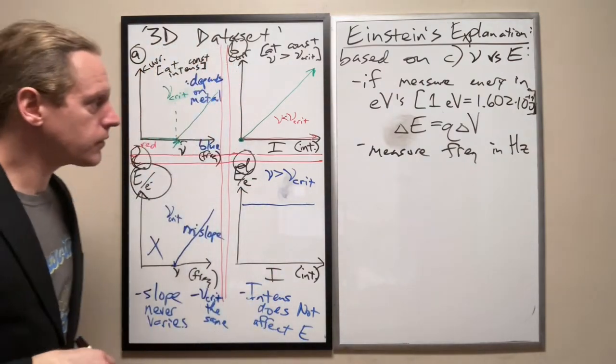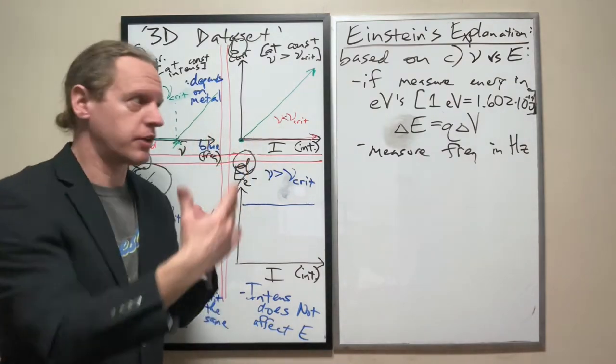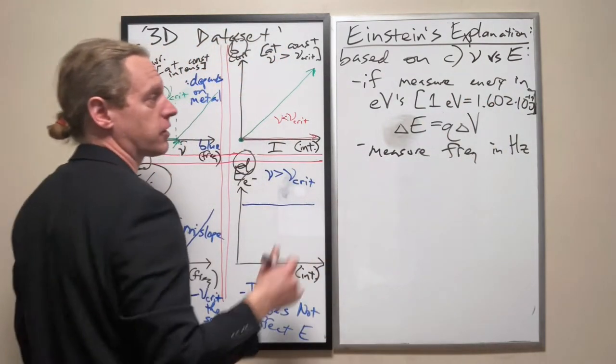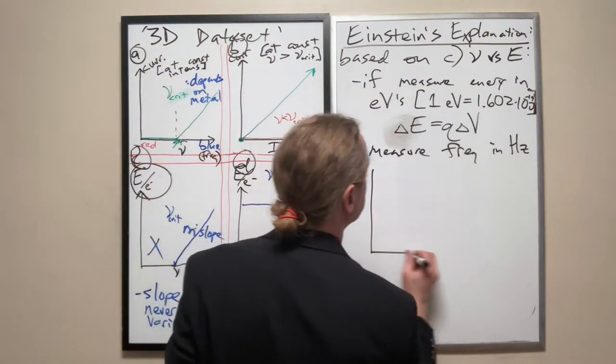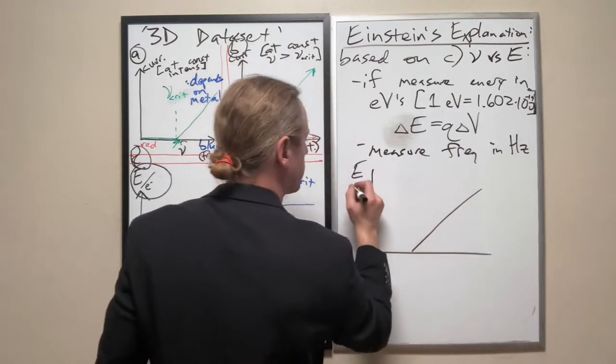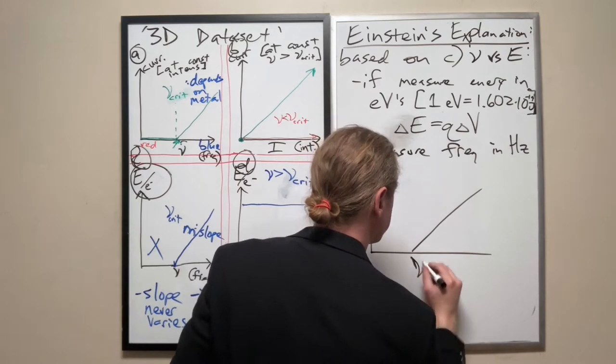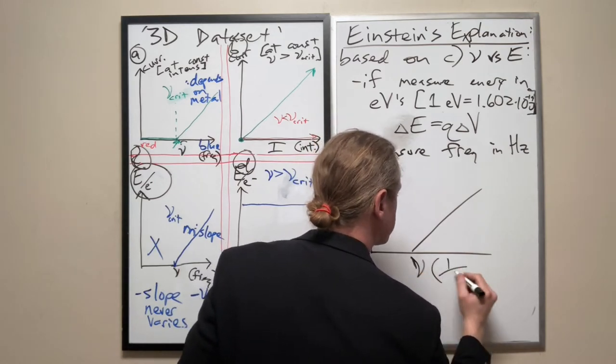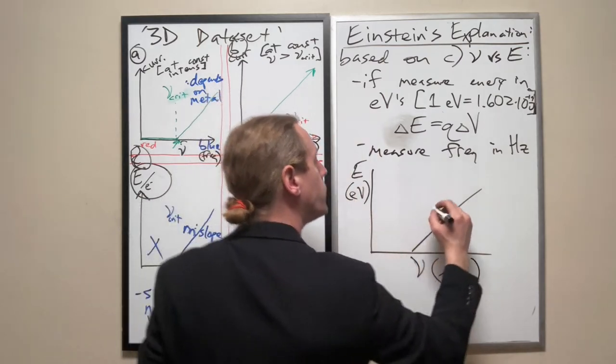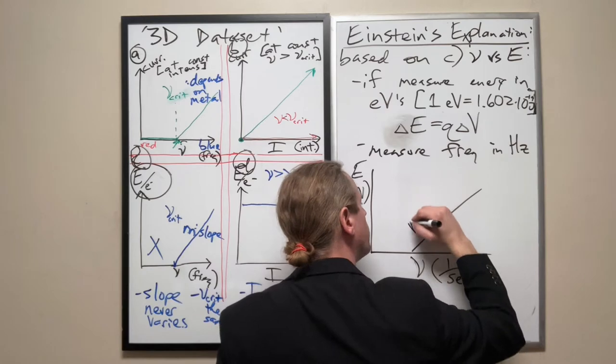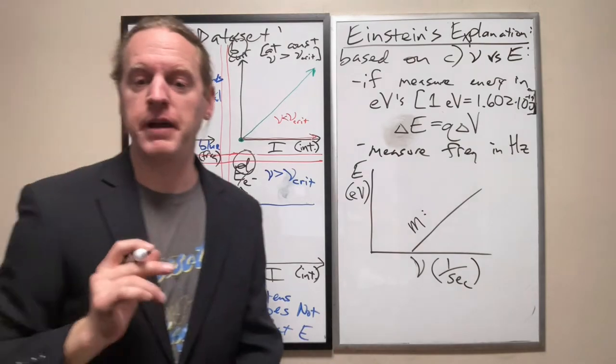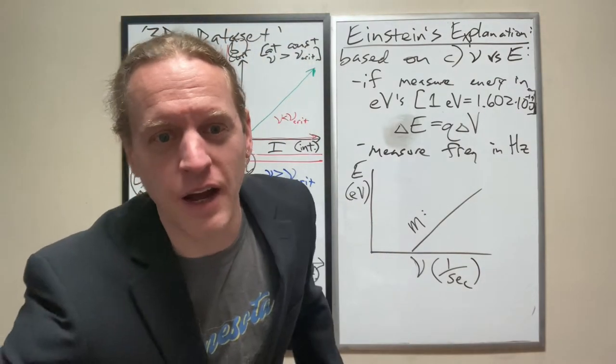Again, it's based on this equation. Delta E, the amount of energy gained or lost by an electron equals Q delta V. And one electron times one volt is literally one electron volt of energy. So we're measuring the energy in electron volts. And in this axis here, that's an electron volt. Here for the frequency, measure frequency in hertz, which is inverse seconds. And by the way, as the frequency in hertz increases, the wavelength decreases. So if those two things are correct, the graph that you end up with here looks like this.